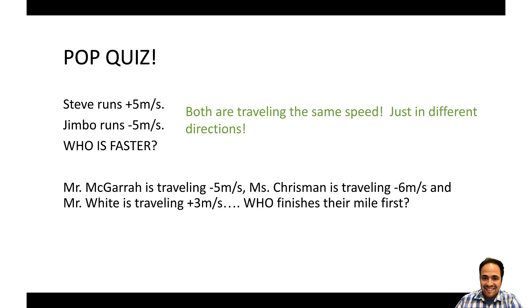In our next example, Mr. McGarrah is traveling negative five meters per second. Ms. Chrisman is traveling at negative six meters per second. Mr. White is traveling at positive three meters per second. Who finishes their mile first? Well, if you guessed that Ms. Chrisman finished her mile first, then you are correct. So again, looking at that magnitude component, that's telling us how fast. Ms. Chrisman is traveling at six meters per second. And in this case, Mr. White seems to be the only one traveling in the wrong direction.